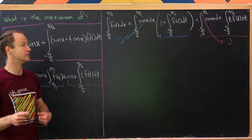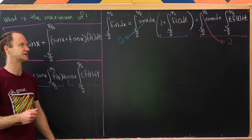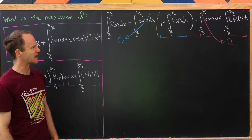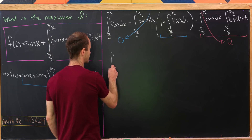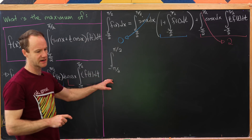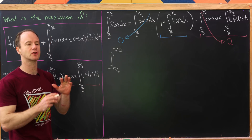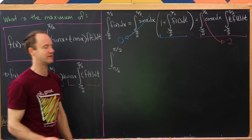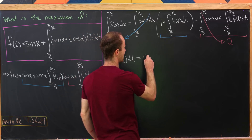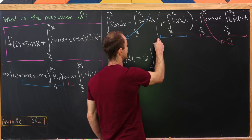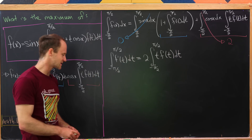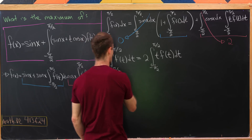Using evenness, it's 2 times the integral from 0 to π/2, and sine of π/2 is 1. So bringing that down, we switch to t as our dummy variable and get: the integral from minus π/2 to π/2 of f(t) dt equals 2 times the integral from minus π/2 to π/2 of t·f(t) dt. Let's put a box around that — it's our first key equation.